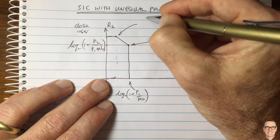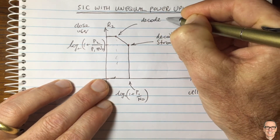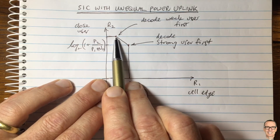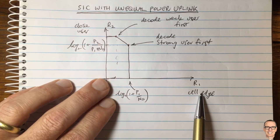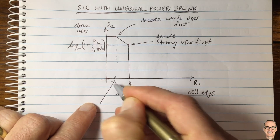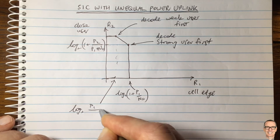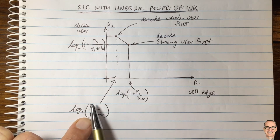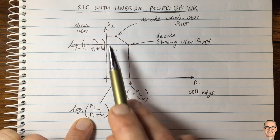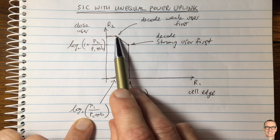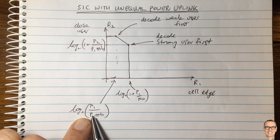You can achieve a lower rate for the cell edge user by decoding the weak user first. That operating point might be good enough if the cell edge user is a low data rate user. This is a bit counterintuitive — the formula becomes log base 2 of P1 divided by P2 plus N0, and if P2 is large it seems odd. But yes, capacity and the Shannon formula tell us it is possible with sufficient error correction coding to decode user 1's signal even with lots of interference.